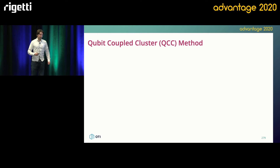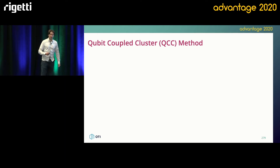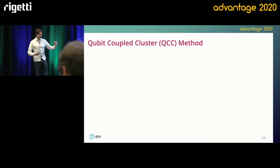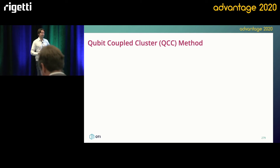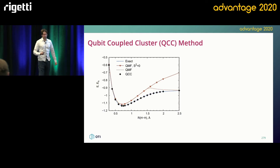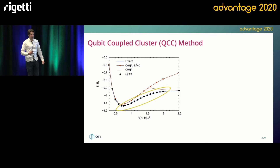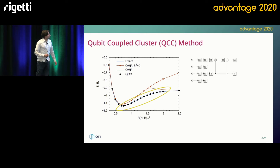In order to remedy the issue with CNOT gates scaling poorly, we invented something called the qubit coupled cluster method, which is a new theory to generate these circuits. It's like the unitary coupled cluster, except we're not doing a trotterization step — we're directly generating what we call entanglement states. This is one of the first simulations we actually did fairly early on. You can see that qubit coupled cluster will generate a full CI solution if done to completion.